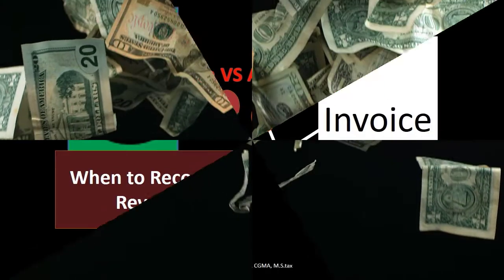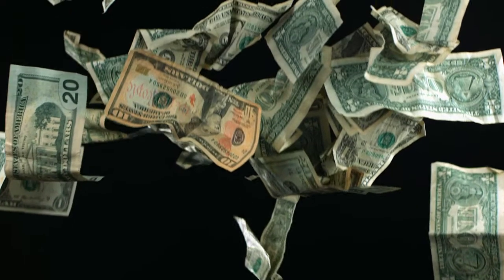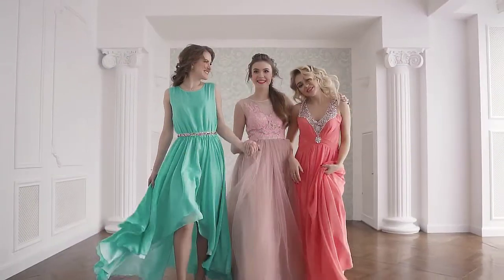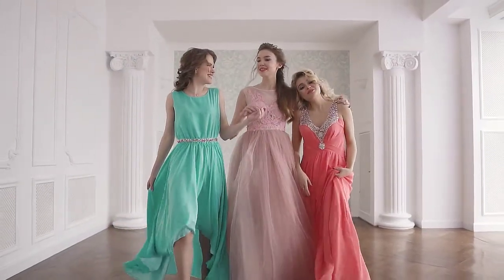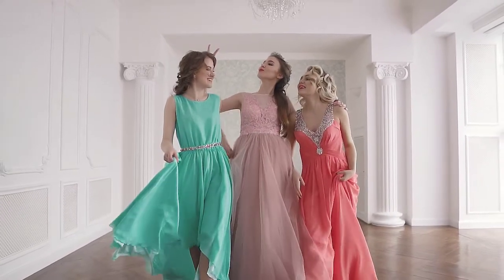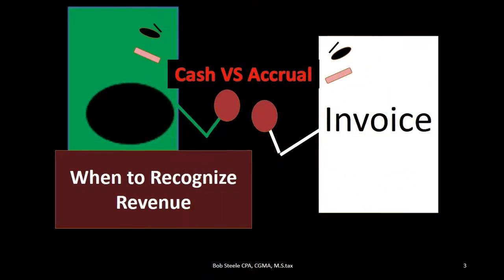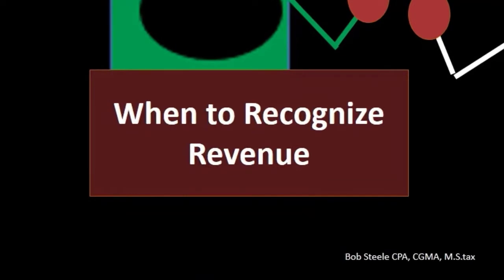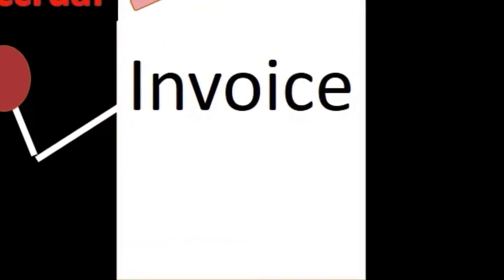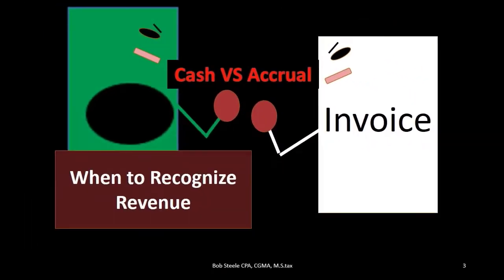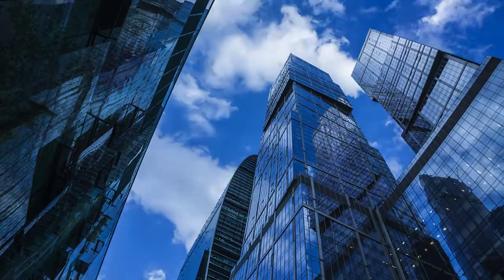When considering cash versus accrual methods, we're talking about timing differences. Timing differences relate to the timing financial statement, which is the income statement. The balance sheet represents where the company stands as of a point in time, while the income statement represents the time frame — how did the company do over time.